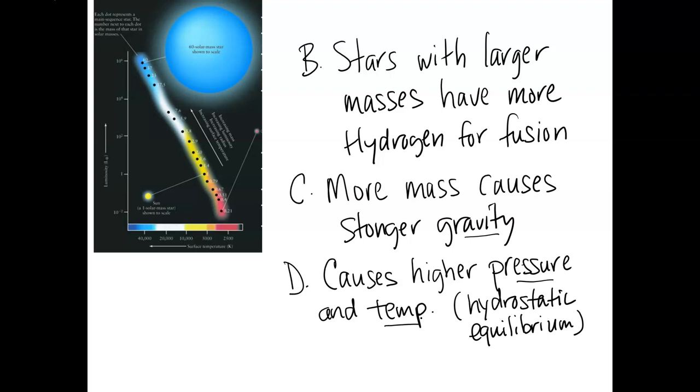And pressure is related to temperature. Remember, as you get deeper into the sun towards the core, gravity, pressure, temperature, density, they all increase. So in an even bigger star, even bigger than the sun, you're going to have more of all of those things: gravity, higher pressure, higher temperature.